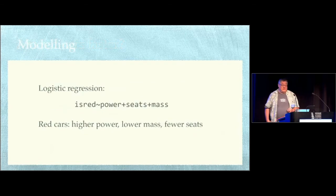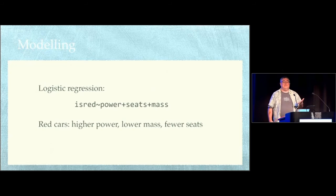Going to fit a logistic regression, is red a binary outcome, depending on the engine power, the number of seats and the mass of the vehicle. And it turns out that red cars, the cars with higher power, lower mass and fewer seats are more likely to be red. So red cars do go faster.